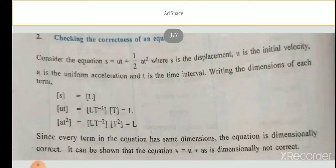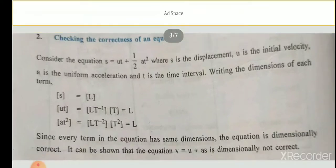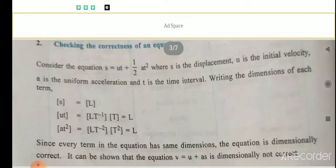Each term on the right-hand side has the dimension of length, which is the same as the dimension of the left-hand side. Hence this equation is dimensionally correct. Note: if an equation is not dimensionally correct, it must be a wrong equation. But a dimensionally correct equation need not be an exact equation.